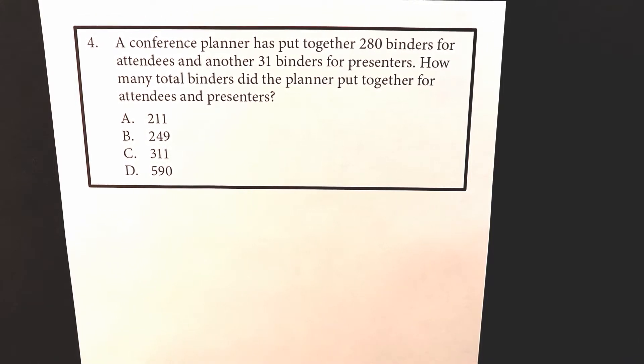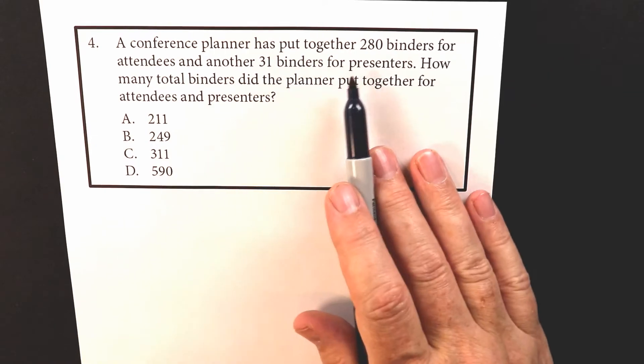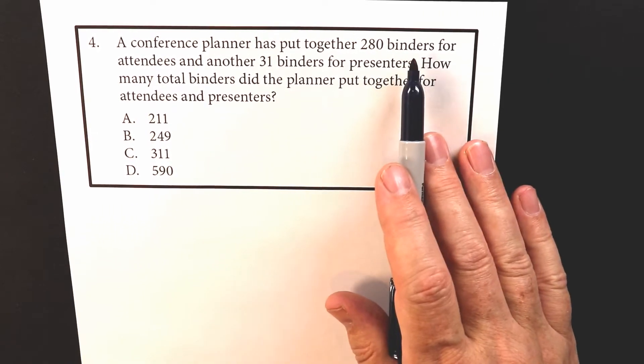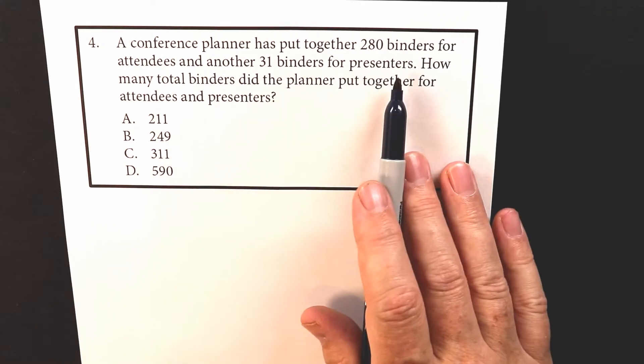So here's another word problem. This is number four for the arithmetic accuplacer, and they're asking you: a conference planner has to put together 280 binders for attendees and another 31 binders for presenters.